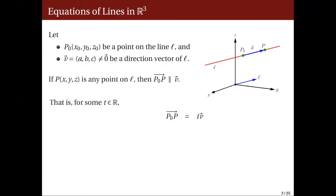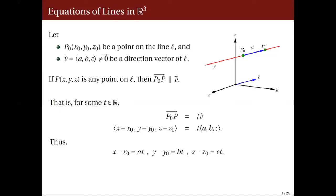On the right-hand side we plug in the components of v, while on the left-hand side we compute the components of p0p as the coordinates of p minus the coordinates of p0. This equality of vectors gives us three equations, since two vectors are equal if and only if their corresponding components are equal: x minus x0 equals a times t; y minus y0 equals b times t; and z minus z0 equals c times t. Isolating x, y, and z gives the following equations.